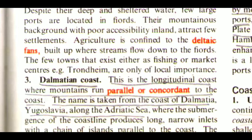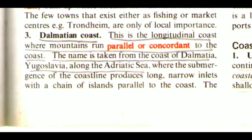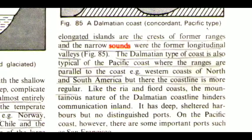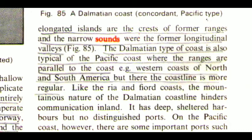The third one is Dalmatian Coast. This is the longitudinal coast where mountains run parallel or concordant to the coast. The name is taken from the coast of Dalmatia, Yugoslavia, along the Adriatic Sea, where the submergence of the coastline produces long narrow inlets with a chain of islands parallel to the coast. The elongated islands are the crests of former ranges and the narrow sounds were the former longitudinal valleys. The Dalmatian type of coast is also typical of the Pacific coast where the ranges are parallel to the coast, e.g. western coast of North and South America, but there the coastline is more regular. Like the Ria and Fjord coast, the mountainous nature of the Dalmatian coastline hinders communication inland. It has deep, sheltered harbors, but no distinguished ports.